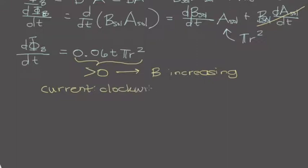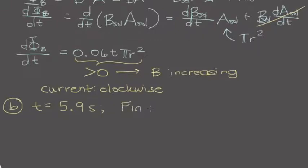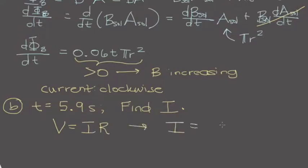Now let's move on to part b of this problem — we've done nearly all of the work. Suppose they give us a specific time, maybe t = 5.9 seconds, and ask us to find the induced current. Using Ohm's Law, V = IR, so I = V/R. If we can find the induced voltage — the EMF — then we're good. We have the resistance of our wire, that's 0.1 ohms, so all we really need is to solve for that induced EMF to get the induced current.